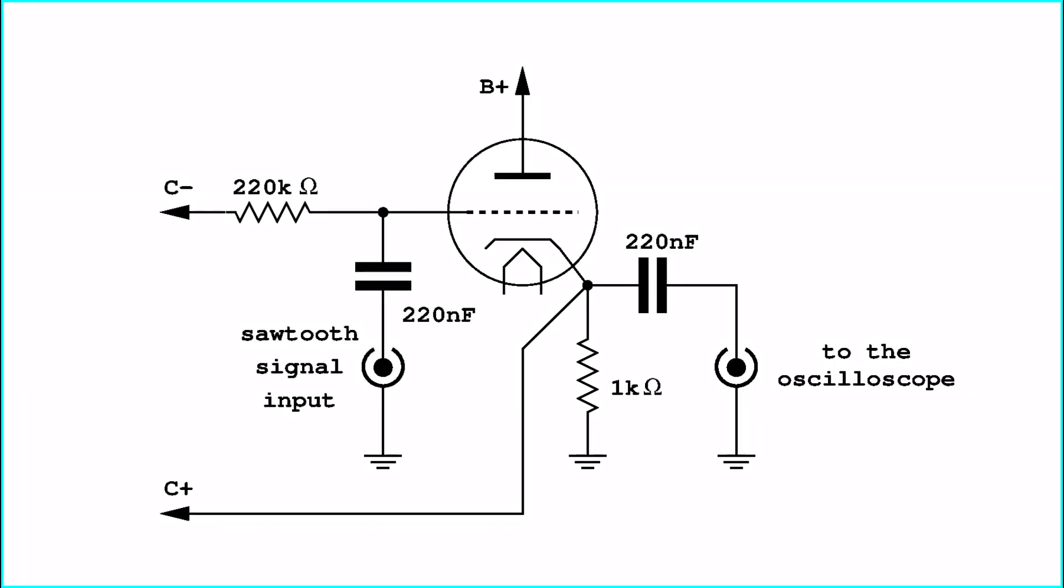Here are the component values that have been used. Please notice that the cathode resistor could have a different value depending on the expected current that has to be measured.